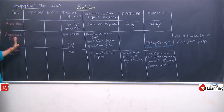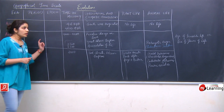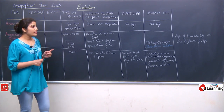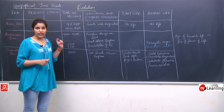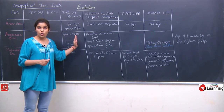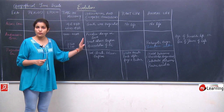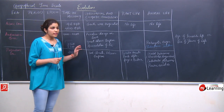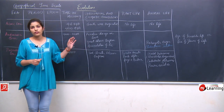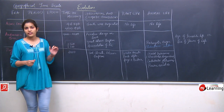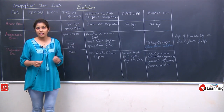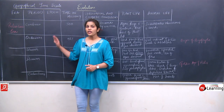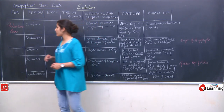The age of invisible life is the Archaeozoic era, also called the era of dawn of life. Now we will look at the remaining eras: Paleozoic, Mesozoic, and Cenozoic. The Paleozoic era has been divided into six periods: Cambrian, Ordovician, Silurian, Devonian, Carboniferous, and Permian.